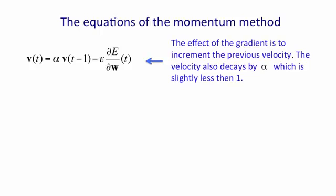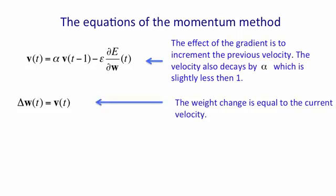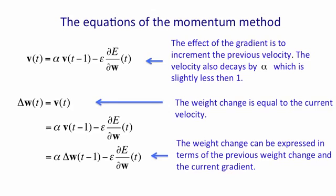And then we add in the effect of the current gradient, which is to make us go downhill by some learning rate times the gradient that we have at time t. And that'll be our new velocity at time t. We then make our weight change at time t equal to the velocity. That velocity can actually be expressed in terms of previous weight changes, as is shown on the slide here. And I'll leave it to you to follow the math.